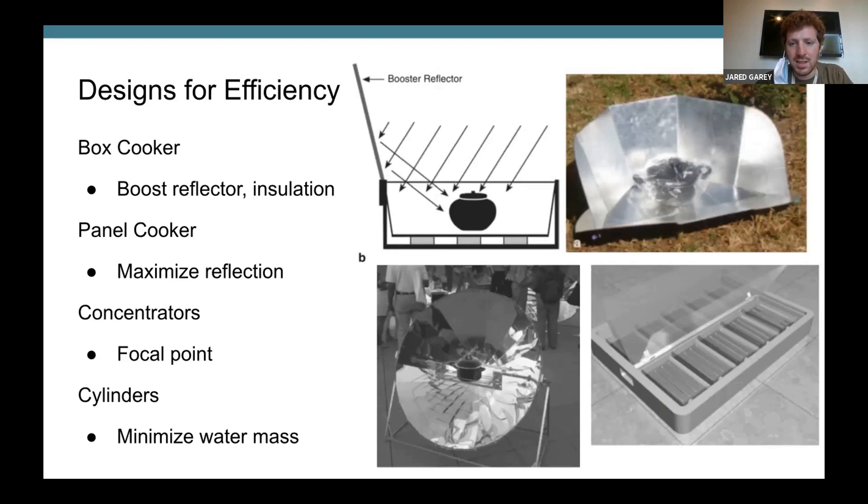The third design is the bottom left picture, the concentrators where all of the heat is coming from a wide area and being reflected to a single focal point. This one has to track the sun quite a bit more. And the last design we saw is cylinders where you have an array of a whole bunch of cylinders that contain a smaller amount of water. So it heats faster because there's less water to heat.